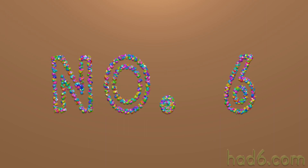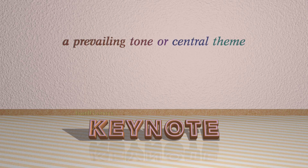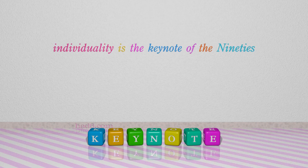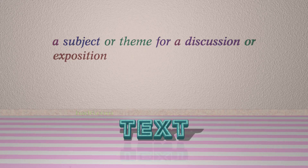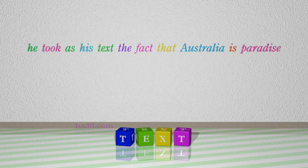Number 6: Keynote. Which means a prevailing tone or central theme, or a subject or theme for a discussion or exposition. Text — for example: He took as his text the fact that Australia is paradise.